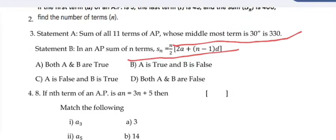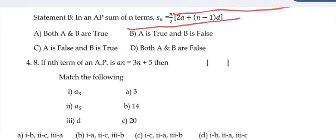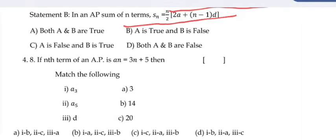Fourth problem: If nth term of an AP is aₙ is equal to 3n plus 5, then match the following. So n is equal to 1, if we substitute we get a₁. Similarly, n is equal to 2, n is equal to 3 gives the successive terms.